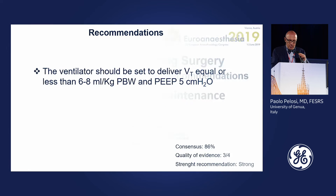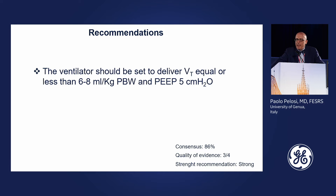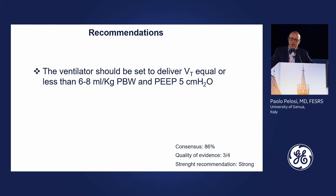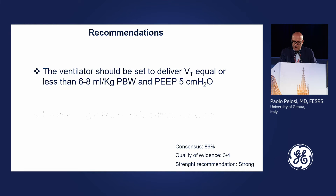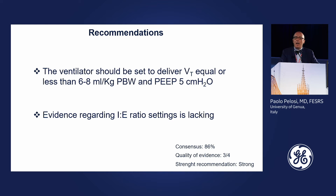Now we go to the recommendations that were discussed and agreed. Ventilation settings during anesthesia: deliver a tidal volume equal to or less than 6 to 8 mL per kilogram predicted body weight with PEEP 5. The evidence regarding high inspiratory-to-expiratory ratio is really lacking; we usually use a 1:2 ratio in most patients.